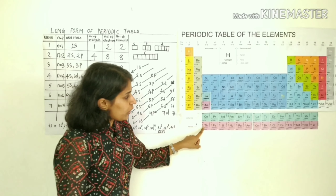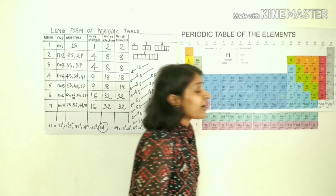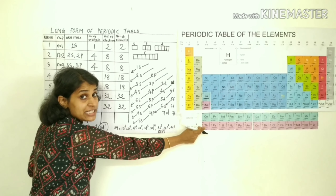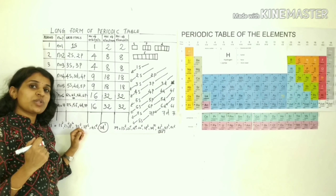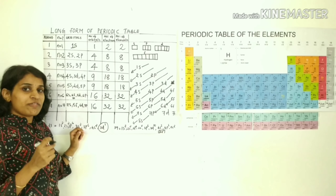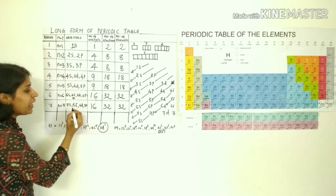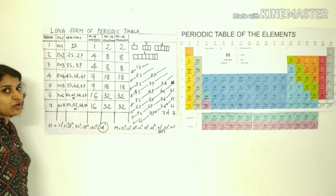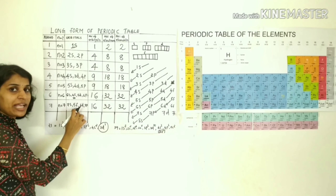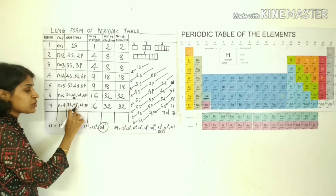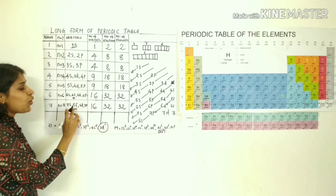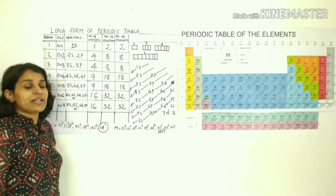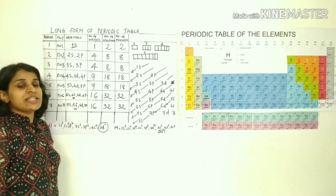In the seventh period, the elements from thorium (atomic number 90) to lawrencium — where the last electron enters the 5f orbital as the outermost orbital — form the 5f inner transition series, also known as the actinoids. The description of groups will be covered in the next class.